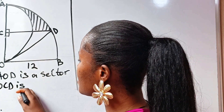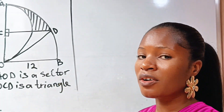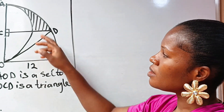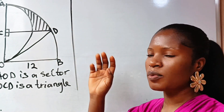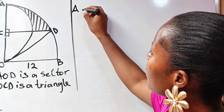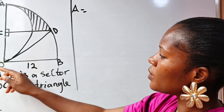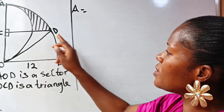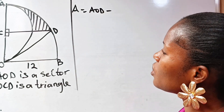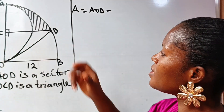OCD is a triangle. So how do we get the area of this shaded portion? The area of the shaded portion A is equal to the area of sector AOD minus the area of triangle OCD.